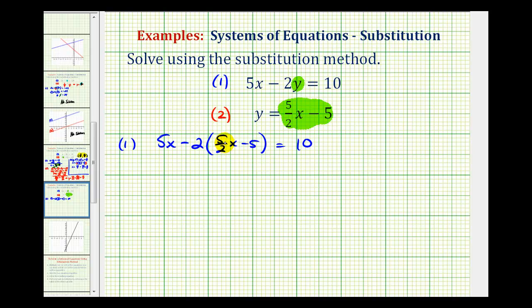So the first step here is going to be to clear the parentheses. So we'll distribute. So we'll have five x, for this first product, we can think of this as negative two over one. Notice how the twos would simplify out. So we'd have minus five x.